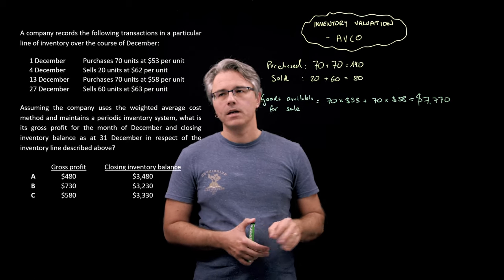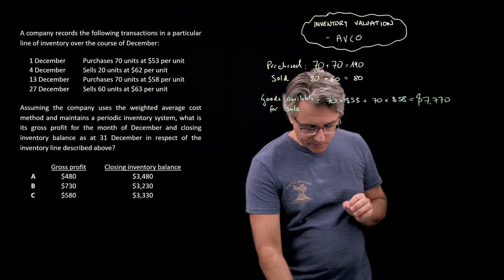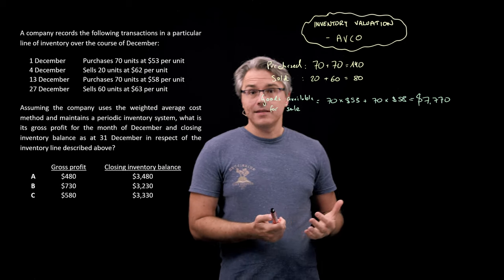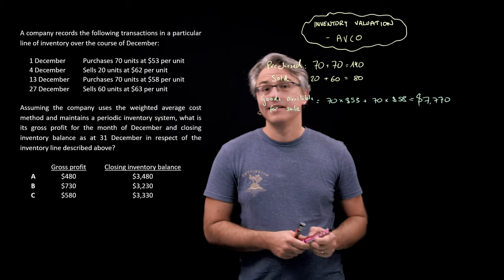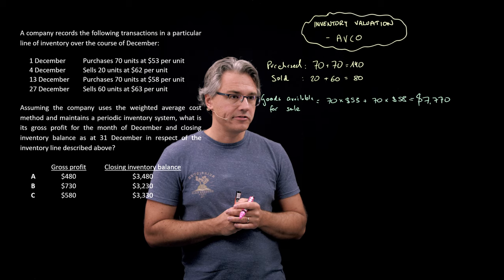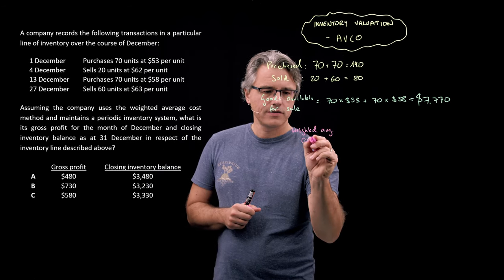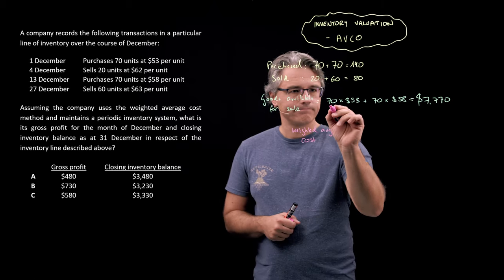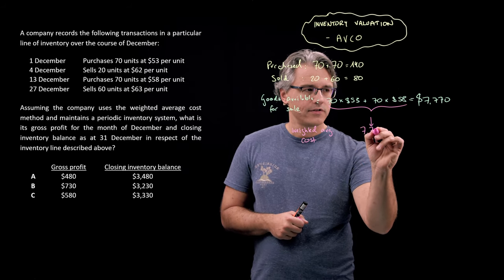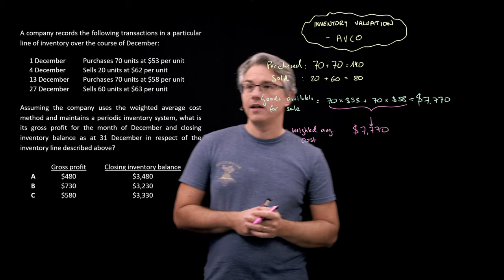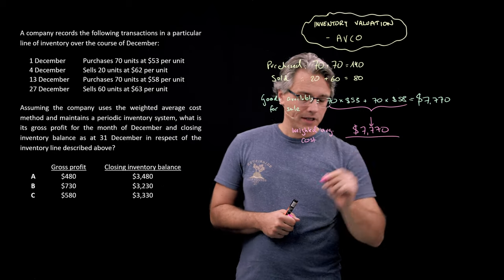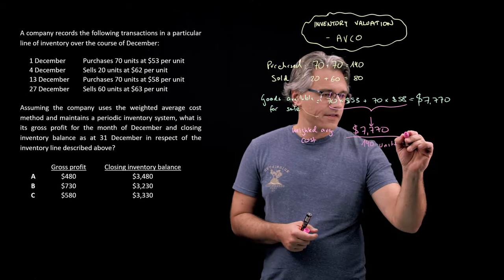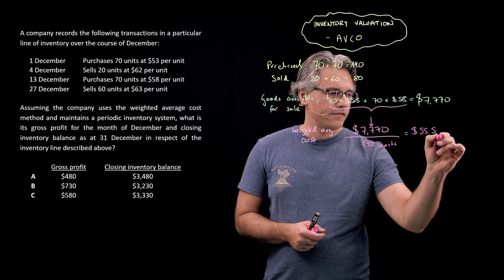At this point, we need to calculate something very specific to the AVCO weighted average cost method — and that is the average cost of the items we had at our disposal. The weighted average cost of the inventory items would be $7,770 — the total value of the goods available — divided by the number of units, 140 units. This gives $55.50 on a per unit basis.